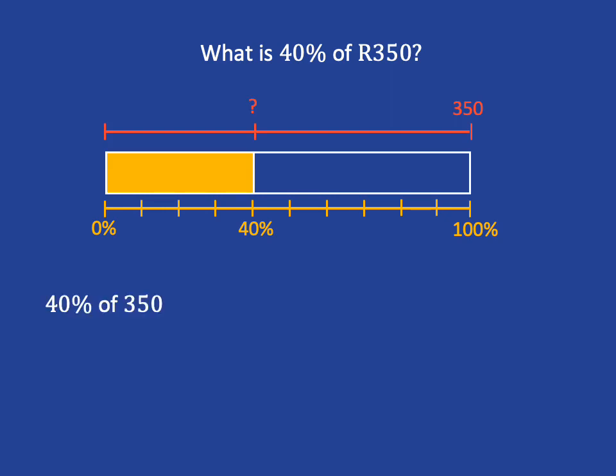To calculate 40% of 350, we know 40% is just 40 over 100, and so we need to multiply that by 350. We know how to multiply fractions — just multiply the tops together and multiply the bottoms — so you'll have 40 times 350 over 100.